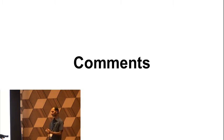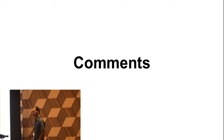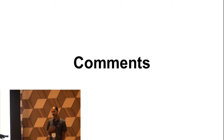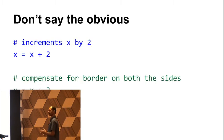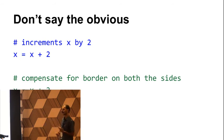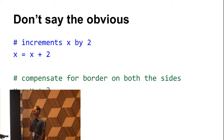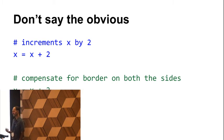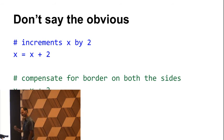There are more things — I am only giving a glimpse of some tips. Now let us focus on comments. Comments are important — they help in understanding the program. But don't say the obvious. Don't write 'increment x by 2' as a comment when I can already read the Python 'x = x + 2'. Say why you are doing it. Why are you adding 2? 'Compensating for border on both sides' — so there is a border on each side, so you increment by 2. Comments should actually say why you are doing something, not just restate what the code says.